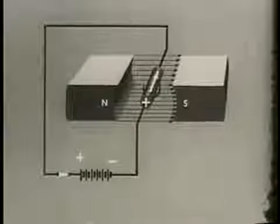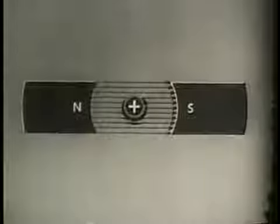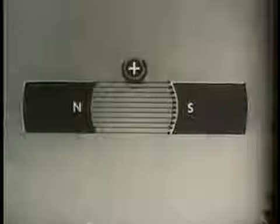Conversely, when current flows in the opposite direction — away from us — the field of the conductor opposes the main field above the conductor. This aids the main field below, distorting the lines down. The field below the conductor is thus made stronger while the field above is made relatively weaker. This forces the conductor to move up. With this basic principle of motor action understood, we can now examine the DC motor.